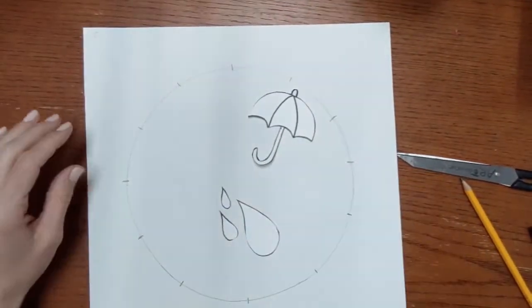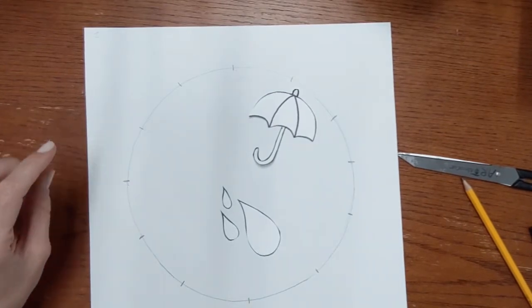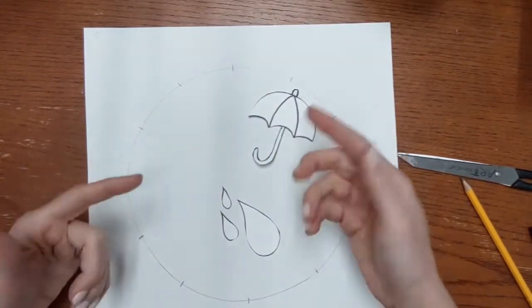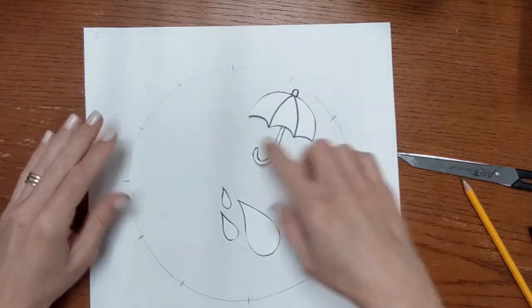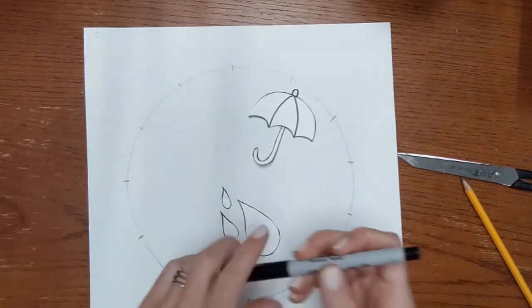Alright, for step number two, I'm going to be using these shapes that I cut out and created. I'm going to use them as templates or tracers so that my shapes that go around my color wheel end up all being the same.